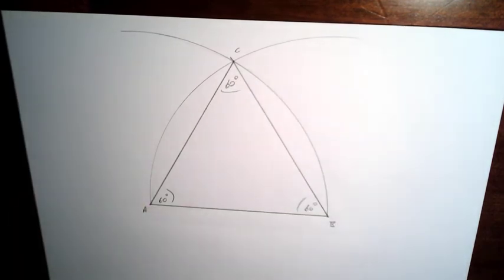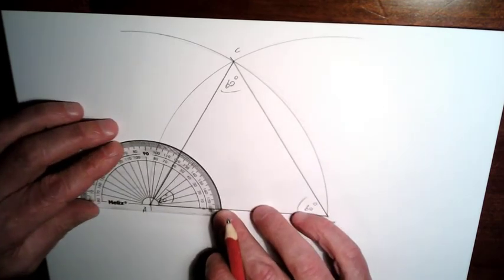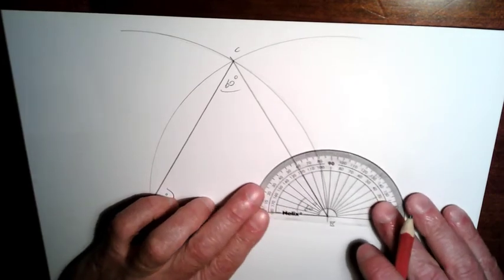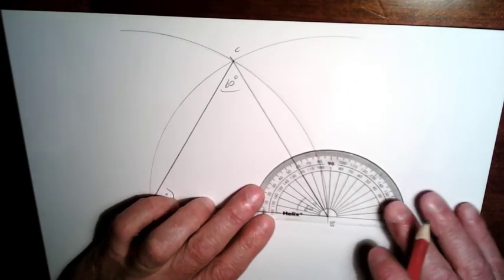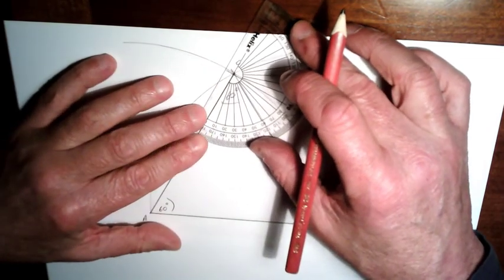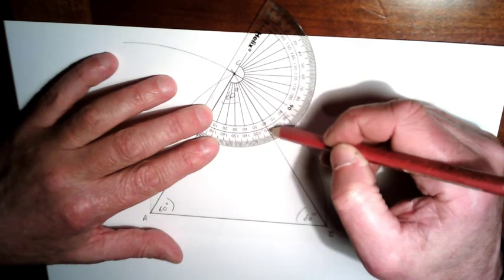So if we take our protractor, we can just check that, and you can see that's 60 degrees there on that side. That's 60 degrees there on that side. And if we have a look at this angle up here, we should also have, yes we do, we have 60 degrees here as well.